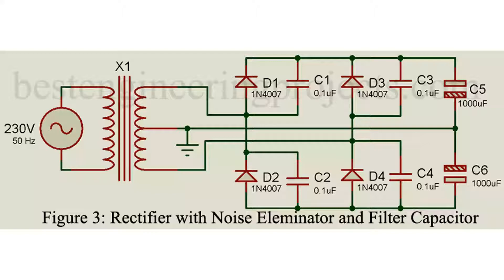While connecting capacitor C6, we have to consider polarity. As we all know, ground is positive in comparison to negative power supply. Thus positive terminal of capacitor C6 must be connected to ground and negative polarity of C6 must be connected to negative output.